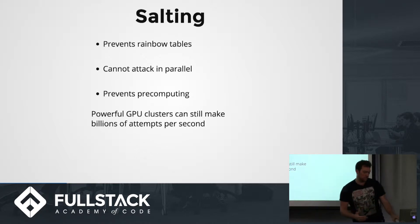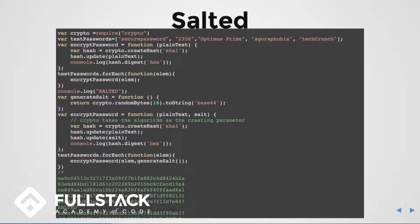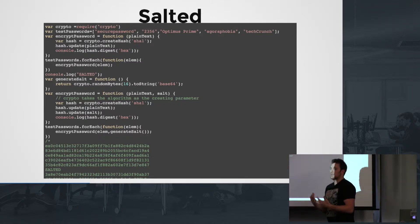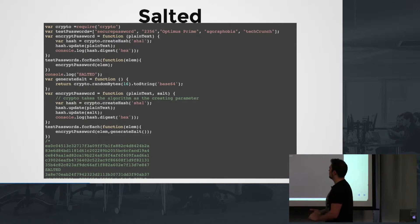Salting prevents pre-computing, but powerful GPU clusters are still extremely powerful, so you still have to be careful. Looking at the salted version — the salted version would not be crackable in this demo because it's based on a dictionary and wordlist approach. In Node.js, you require the crypto library, which handles a lot of the encrypting and hashing natively. You have an encrypt function, a forEach loop, and a salt generator that generates a random 16 bytes, and then you encrypt and move on.